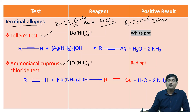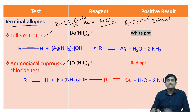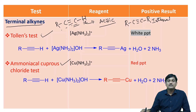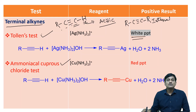By using Tollen's test and ammoniacal cuprous chloride test, we can distinguish terminal alkynes from internal alkynes. In the case of terminal alkynes with Tollen's reagent, there is a formation of a white precipitate. If you take internal alkynes, there is no formation of white precipitate, due to not having an acidic proton.